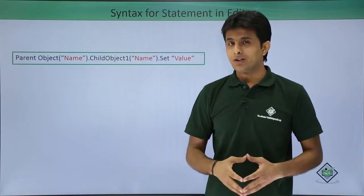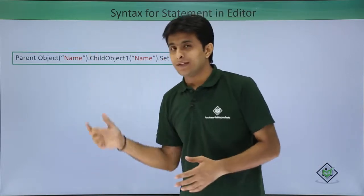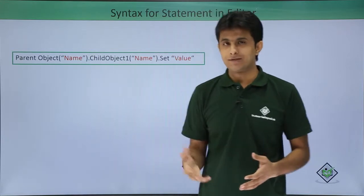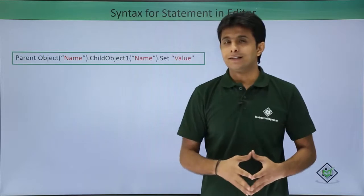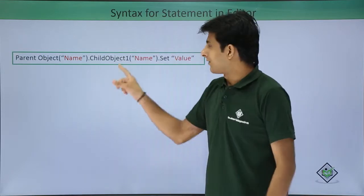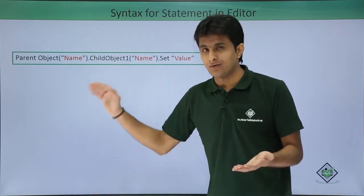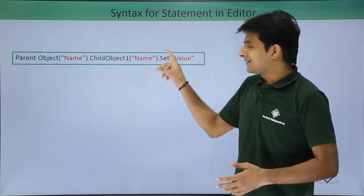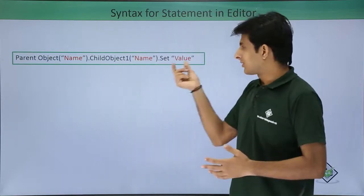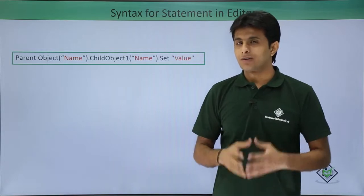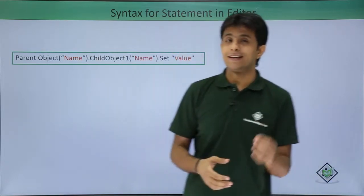The syntax starts with a parent object; in brackets they have given the name in double quotes, shown in red font which can be changed later. After that you put a dot, followed by a child object — there can be multiple child objects. The child object name is also in double quotes in brackets, then a dot, and then the operation you perform on that object.